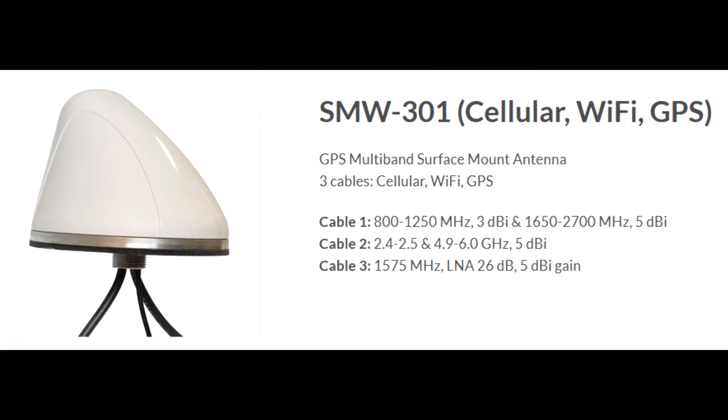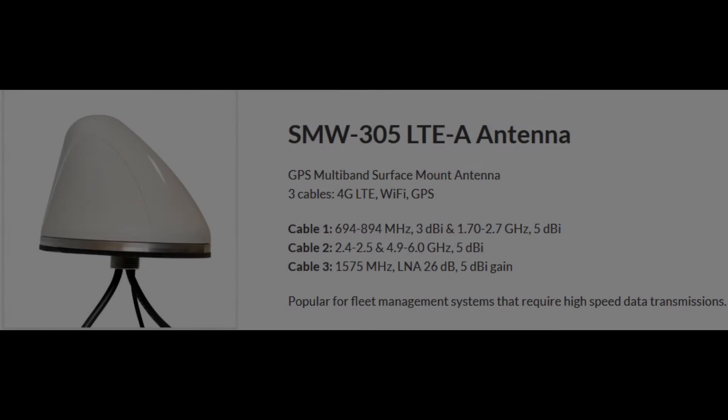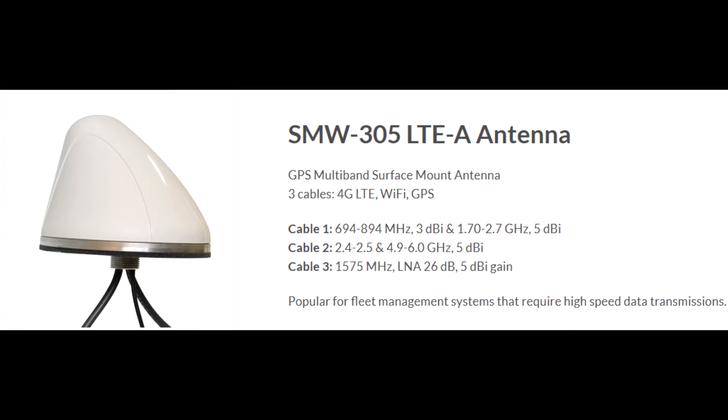Different modems use different combinations of wireless technologies, so it is important to choose an antenna that matches the requirements. For example, the SMW-301 covers 3G cellular, while the wideband SMW-305 covers 4G cellular LTE, as well as 3G.